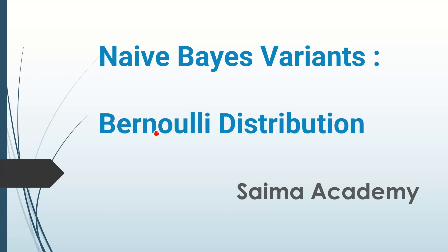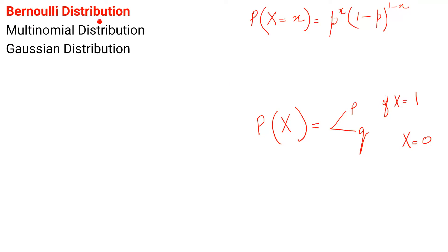In this lesson, I will explain naive Bayes variants. As you know, there are three different kinds of variants which come under naive Bayes: Bernoulli distribution, multinomial distribution, and Gaussian distribution. In this lesson, our focus will be on Bernoulli distribution.